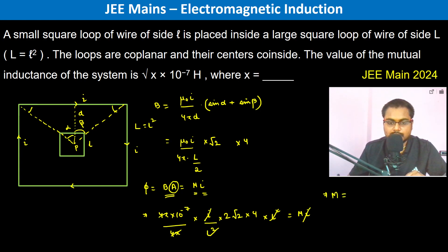So this is √128 × 10⁻⁷. Therefore, it becomes 128 × 10⁻⁷.